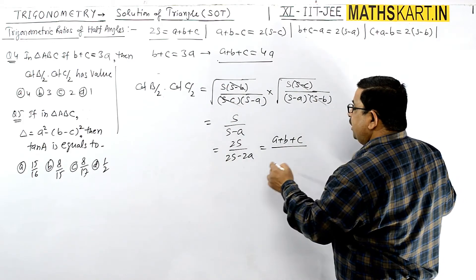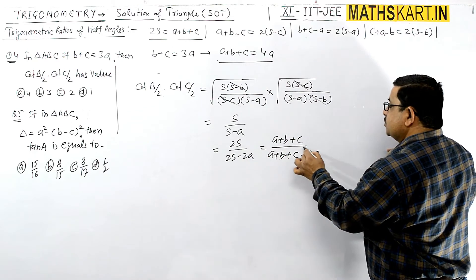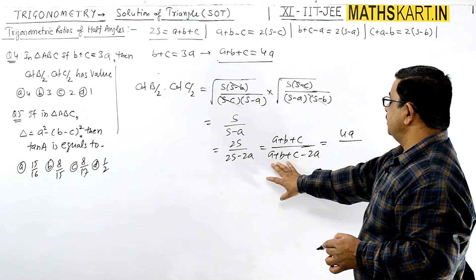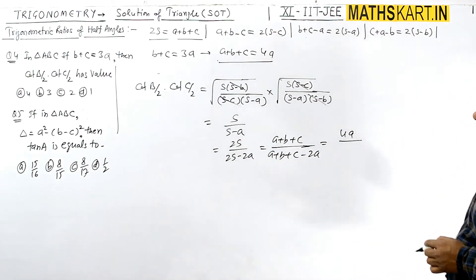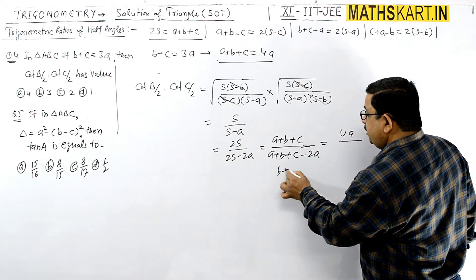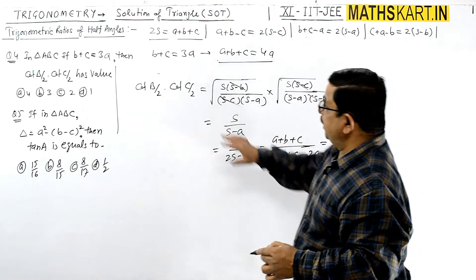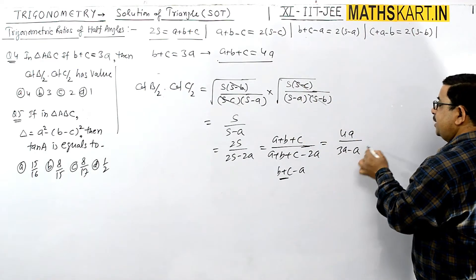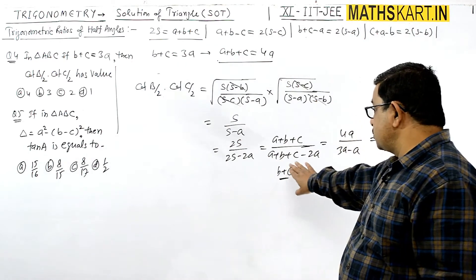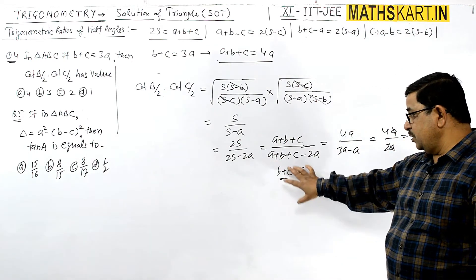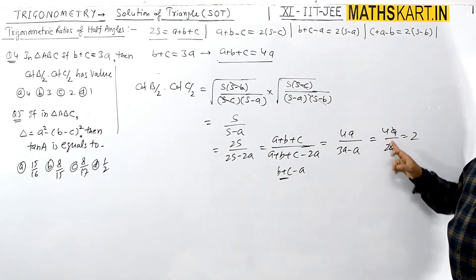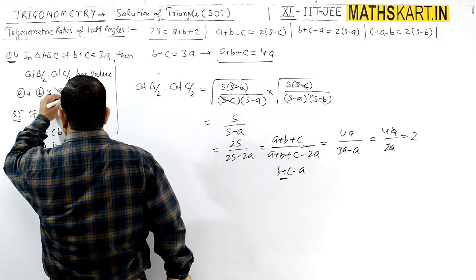Writing 2S in the numerator and 2S - 2a in the denominator: 2S = a+b+c = 4a, and 2S - 2a = b+c = 3a. So the value becomes 4a/2a... wait — S/(S-A): numerator is 2S = 4a divided by 2, and denominator is 2S-2a = 3a-a = 2a. So 4a divided by 2a = 2. Option C is correct.